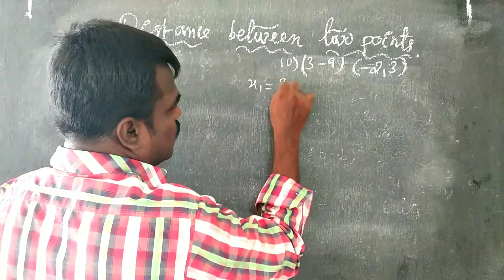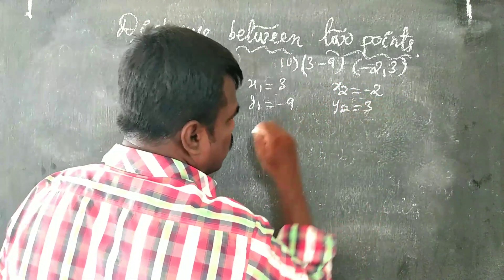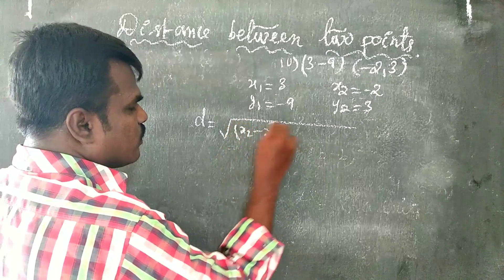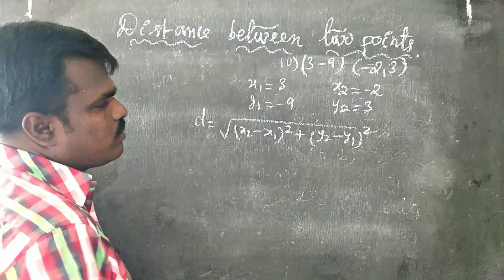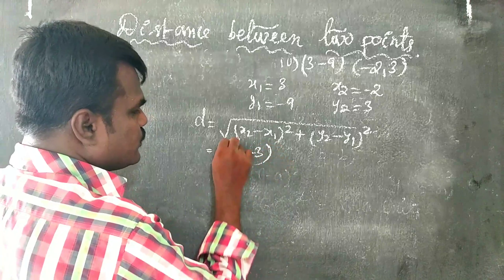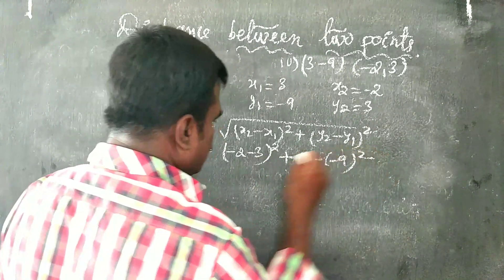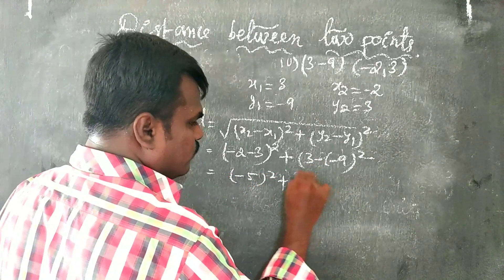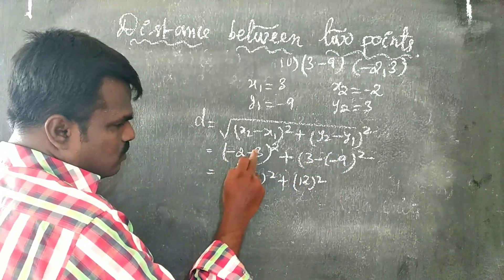Fourth sum: x1 = 3, y1 = -9, x2 = -2, y2 = 3. Applying the formula: d = √((x2 - x1)² + (y2 - y1)²) = √((-2 - 3)² + (3 - (-9))²) = √((-5)² + (12)²).